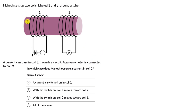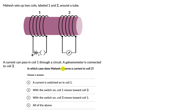Let's solve a question on electromagnetic induction. Mahesh sets up two coils, labeled one and two, around a tube. A current can pass in coil one through a circuit, and a galvanometer is connected to coil two. In which case does Mahesh observe a current in coil two? We have three situations, with the last option being 'all of the above.' Pause the video and give this a try first.